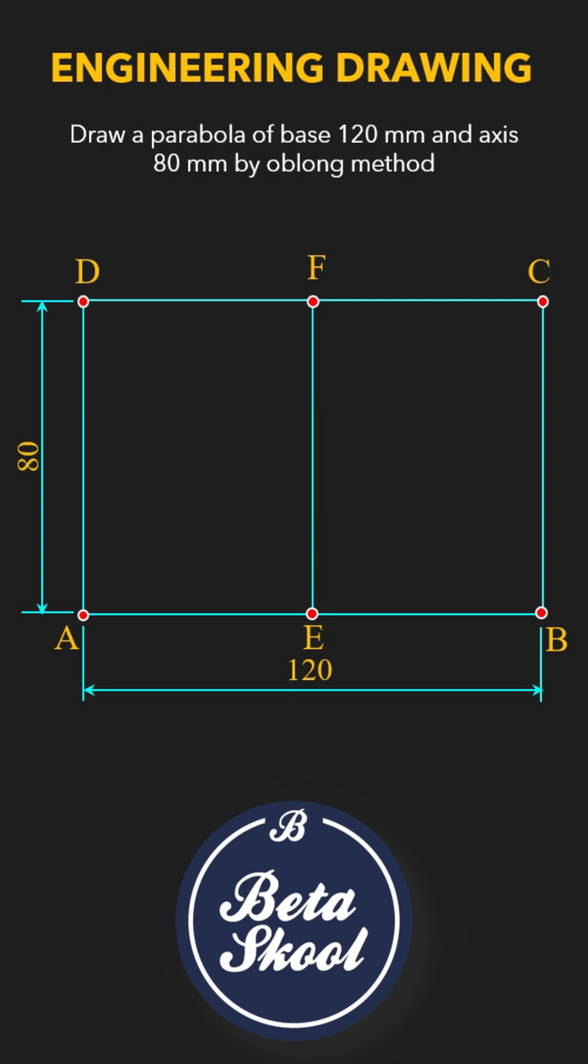Divide side FD into four equal parts and mark the divisions as 1', 2', and 3'. Divide side DA into the same number of equal parts and mark the divisions as 1, 2, and 3. You have to note the direction of numbering on both sides, FD and DA.